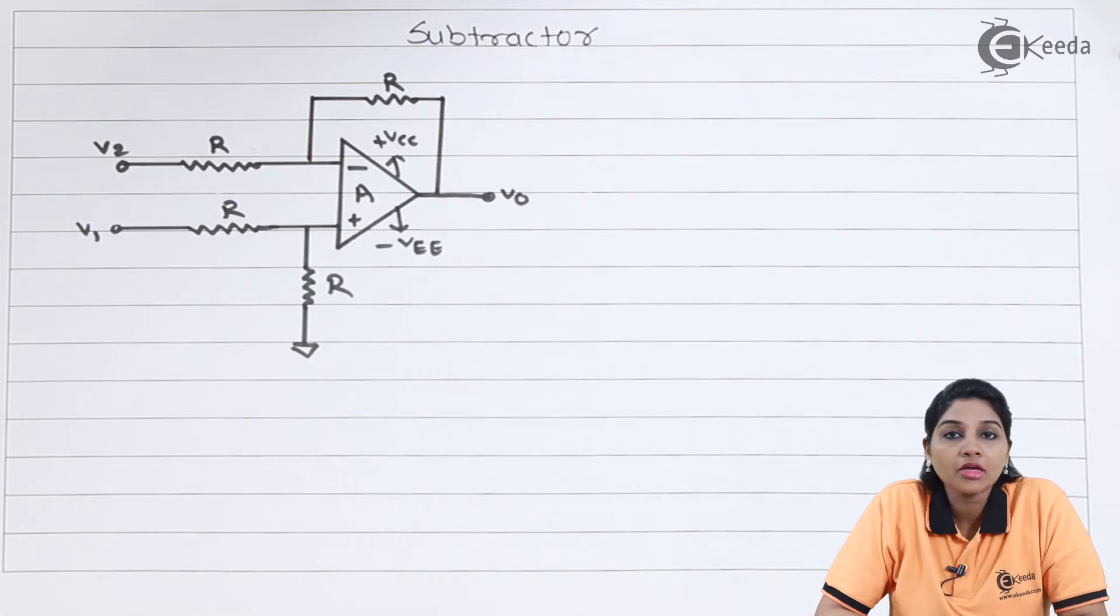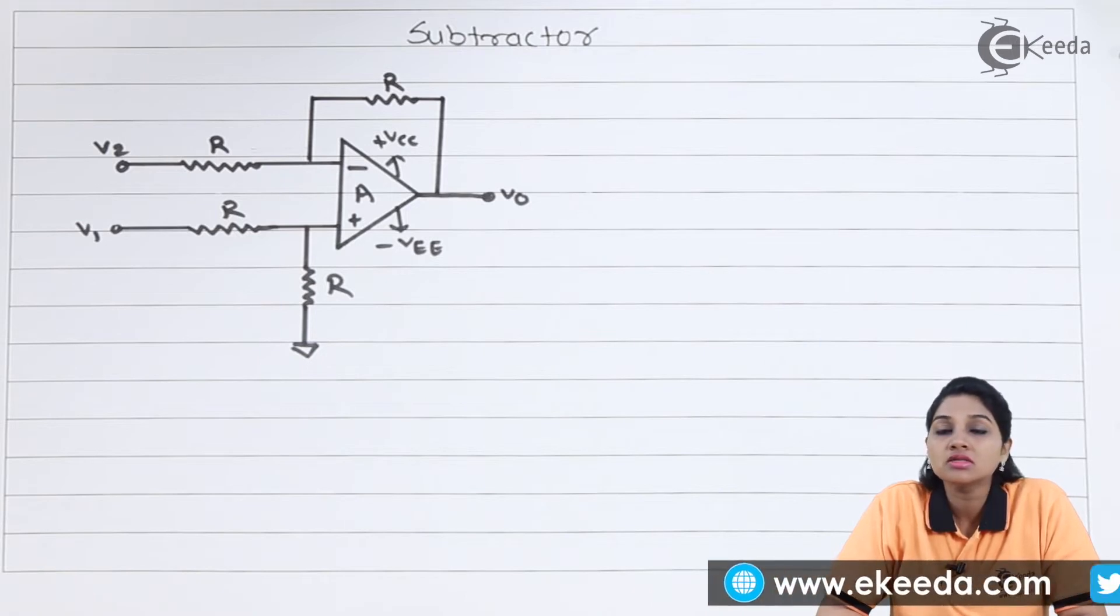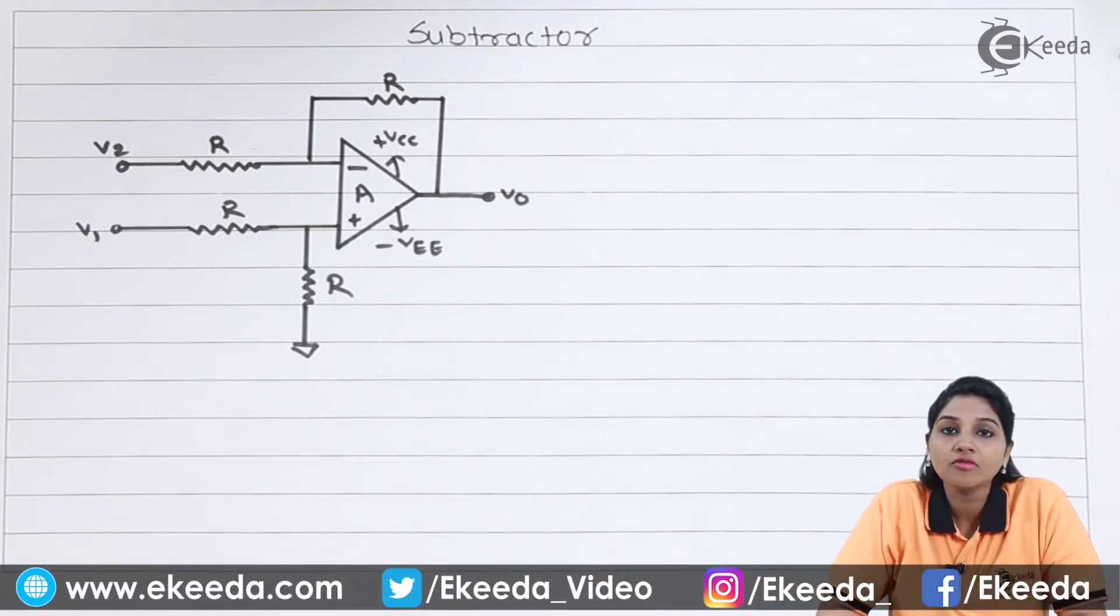We know that op-amp can be used for variety of applications. So one of the applications of op-amp is nothing but subtractor. Subtractor is nothing but the advanced or modified version of difference amplifier.